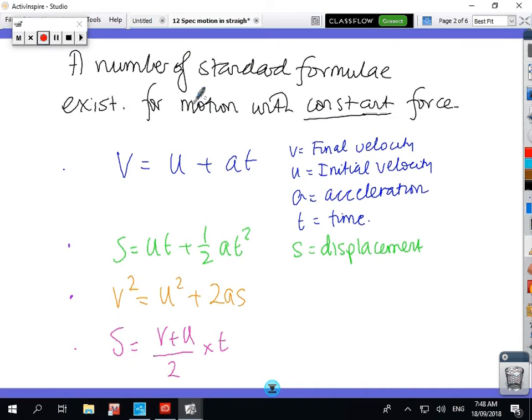So a number of standard formulas exist for motion with constant force. So V equals U plus AT, S equals UT plus 1 half AT squared, V squared equals U squared plus 2AS, and less common, but still useful, S equals V plus U over 2 times T, so averaging the two velocities times time.